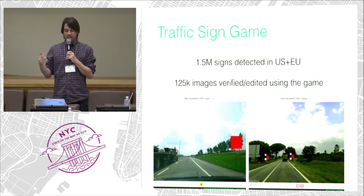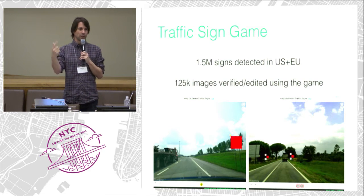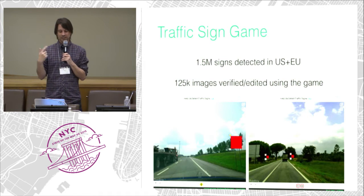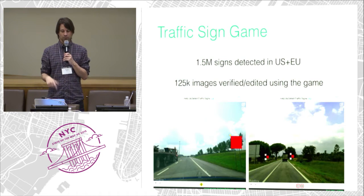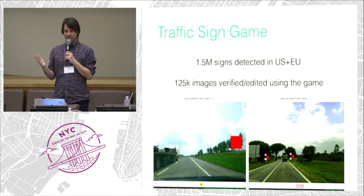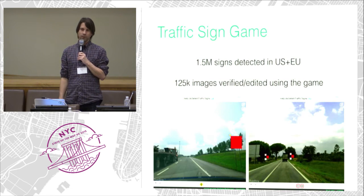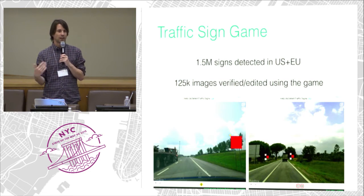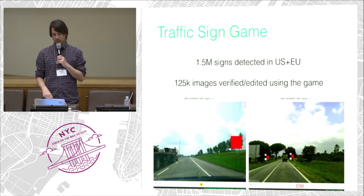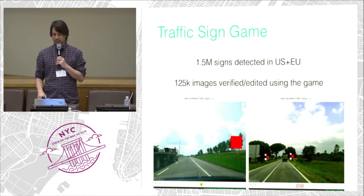In that game there are now about 1.5 million signs randomly selected for you from North America — the US and Canada — and the EU. So far about 125,000 images have been manually verified and edited. This will then feed into the next iteration of our classifiers.